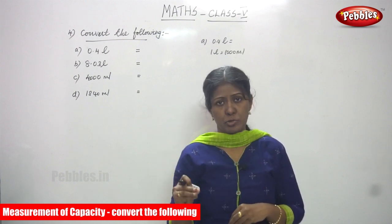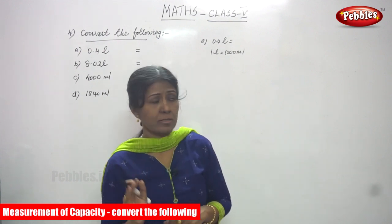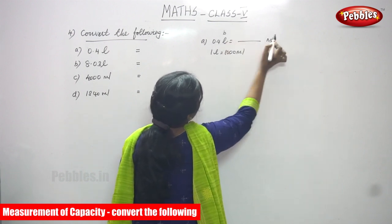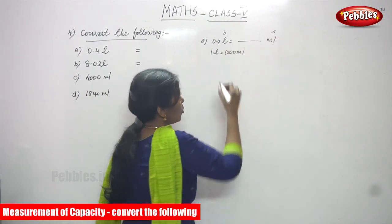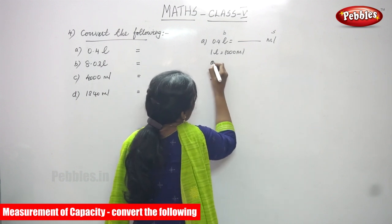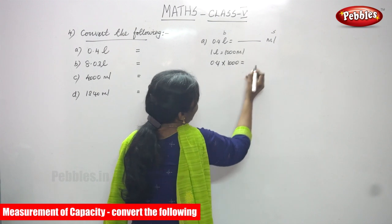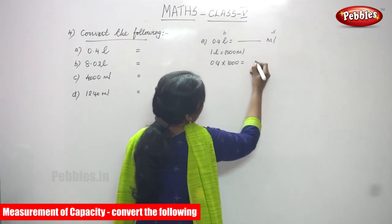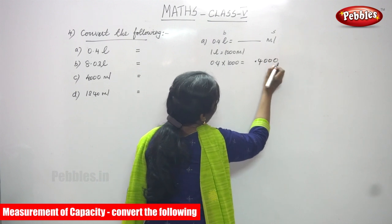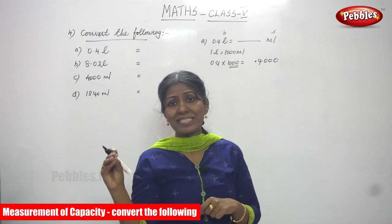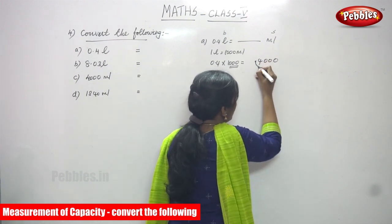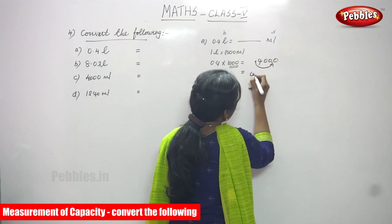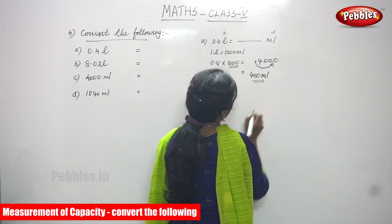Don't forget this concept — liter is a bigger unit and milliliter is a smaller unit. So 0.4 into 1000: you write 0.4 and then three zeros (because 1000 has three zeros). Then move the decimal point three places to the right, which gives you 400 milliliters. This is the right answer.